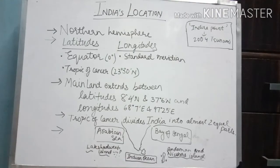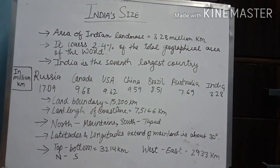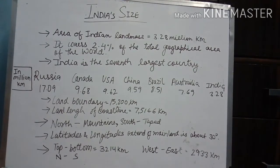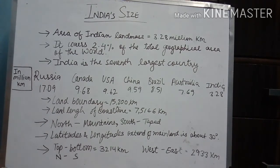Now we will look at India's size. India's land mass area is 3.28 million square kilometers. India covers 2.4 percent of the total geographical area of the world.